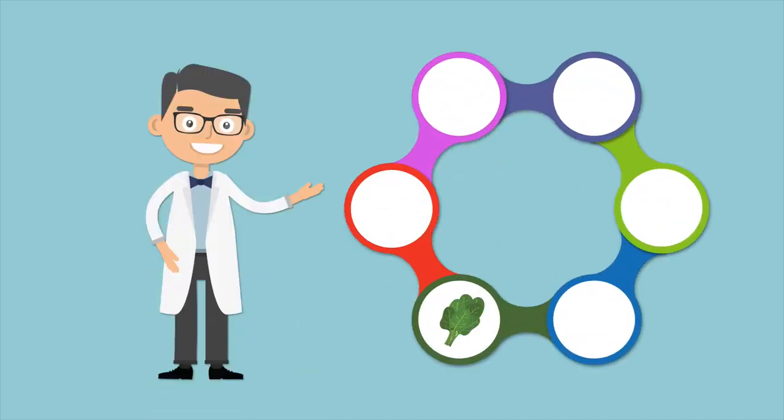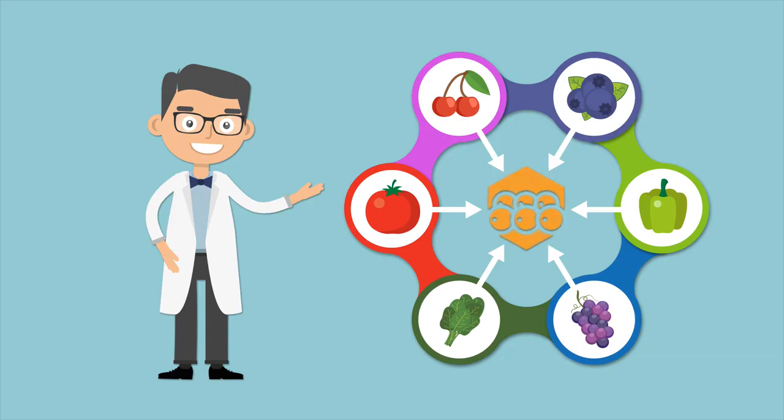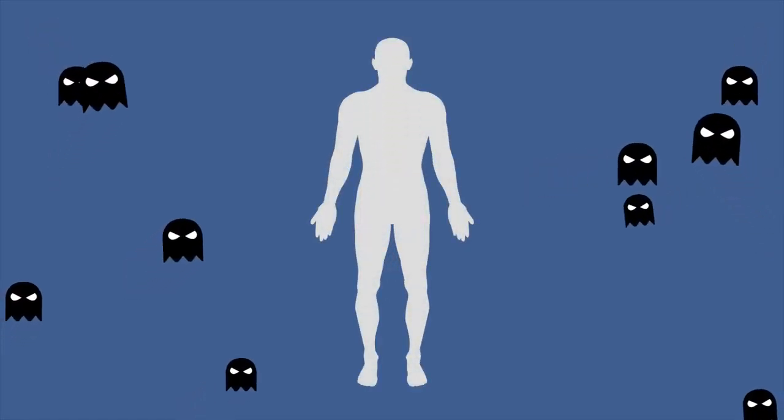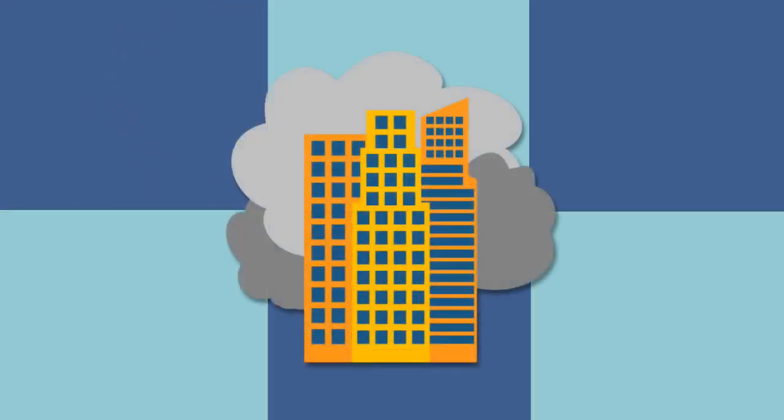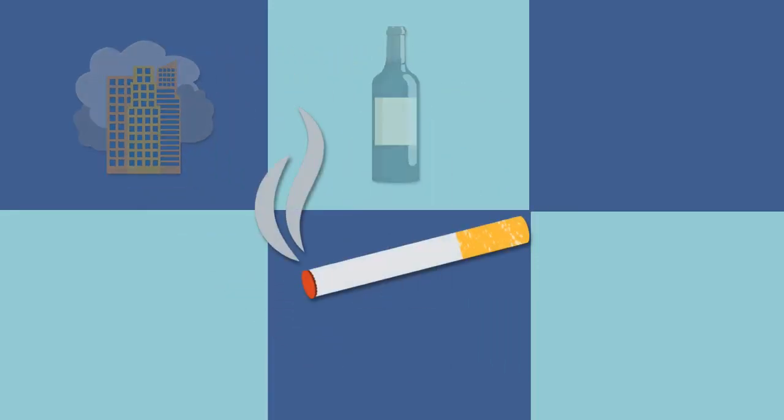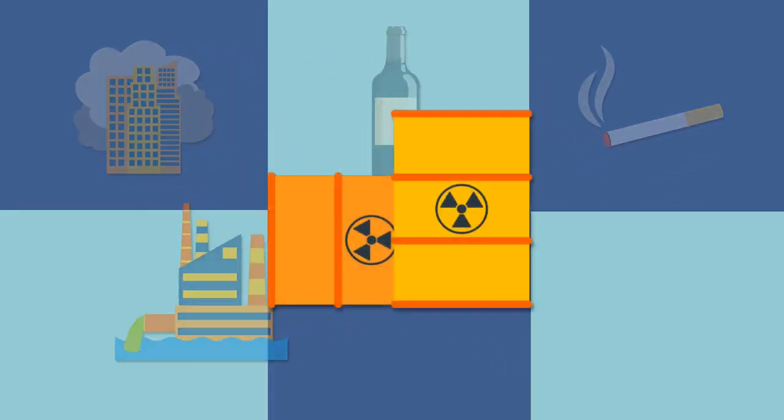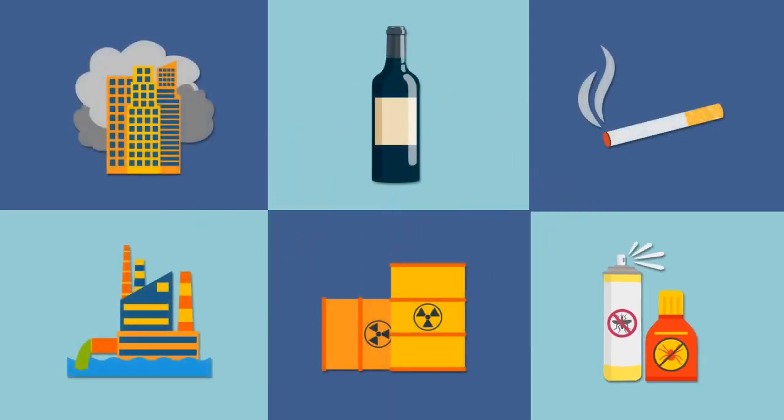Antioxidants are found in fruits and vegetables. Antioxidants are substances that inhibit the activity of free radicals. Free radicals are harmful to our bodies and are present everywhere. They are the result of many things, such as pollution, alcohol consumption, tobacco smoke, heavy metals, industrial solvents, and pesticides.